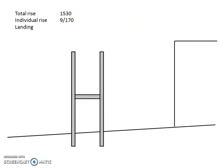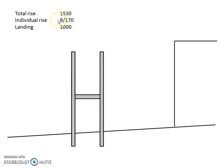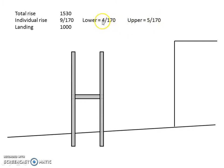Now we're going to think about the landing. For the sake of this example, I'm going to say that this landing is one metre long. It's important to remember that as soon as we put a landing in, it splits our stair into two sections — an upper flight and a lower flight. I've got an odd number of rises, so I need to decide how many go in the top and how many in the bottom. I'm going to put four rises in the bottom flight and five rises in the upper flight, making four at 170 and five at 170.